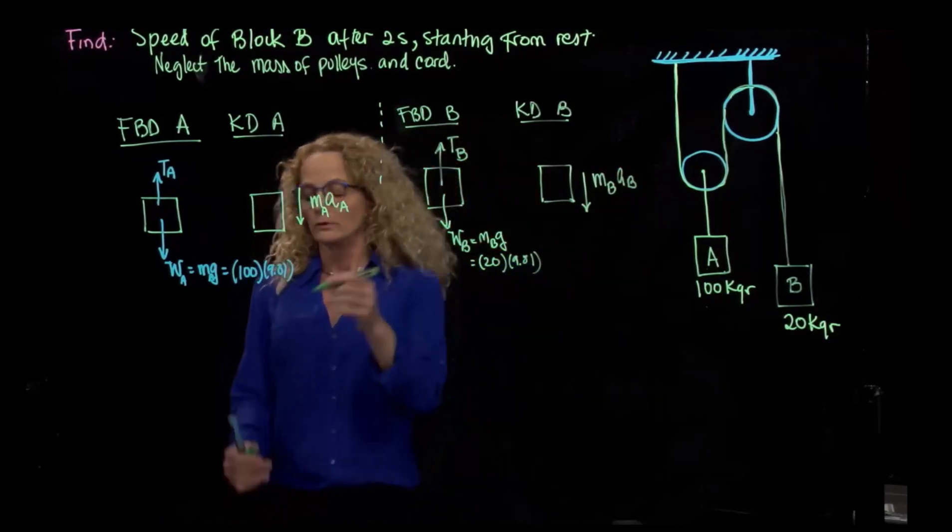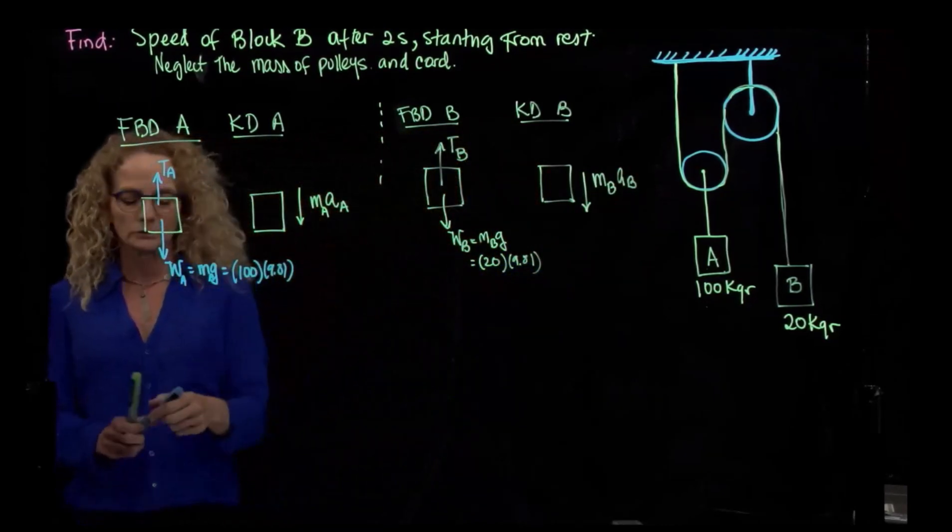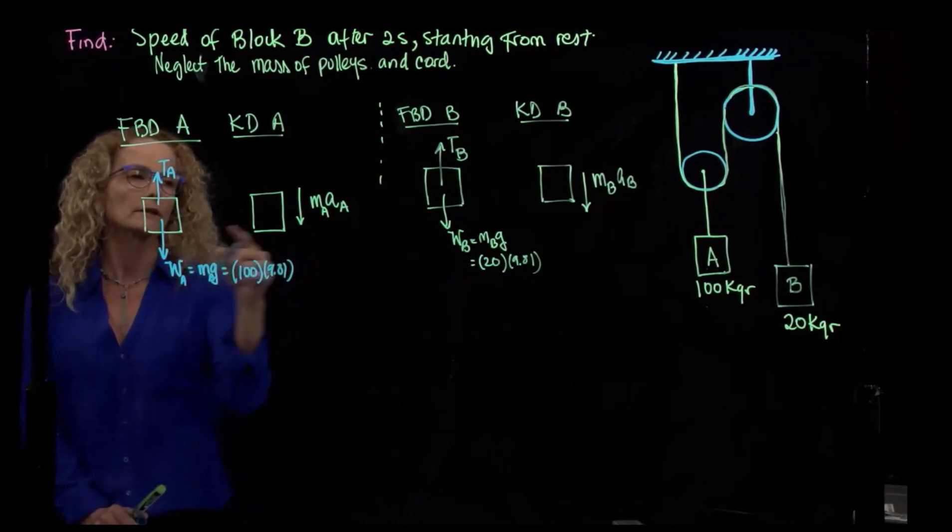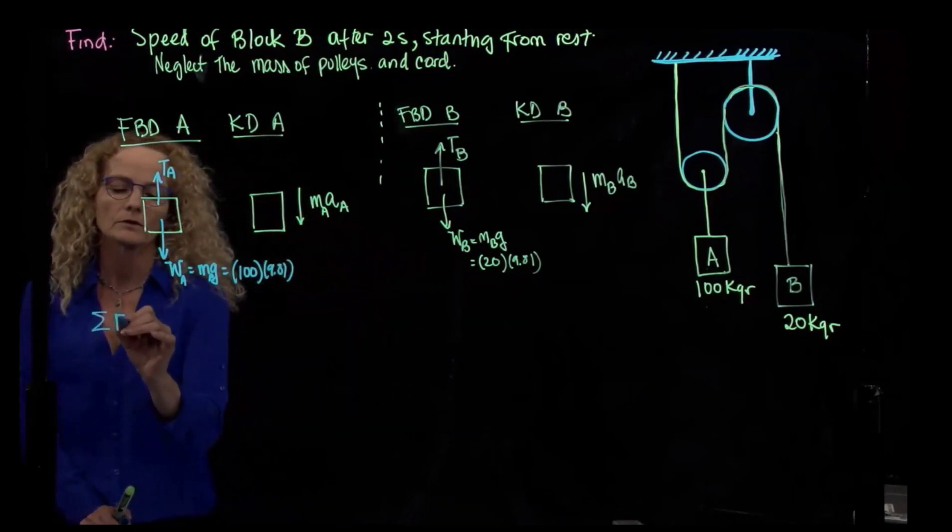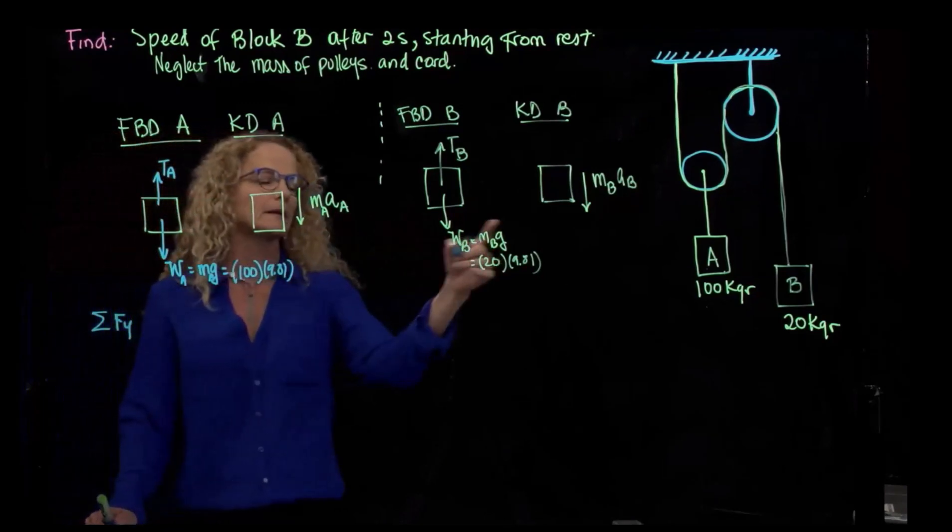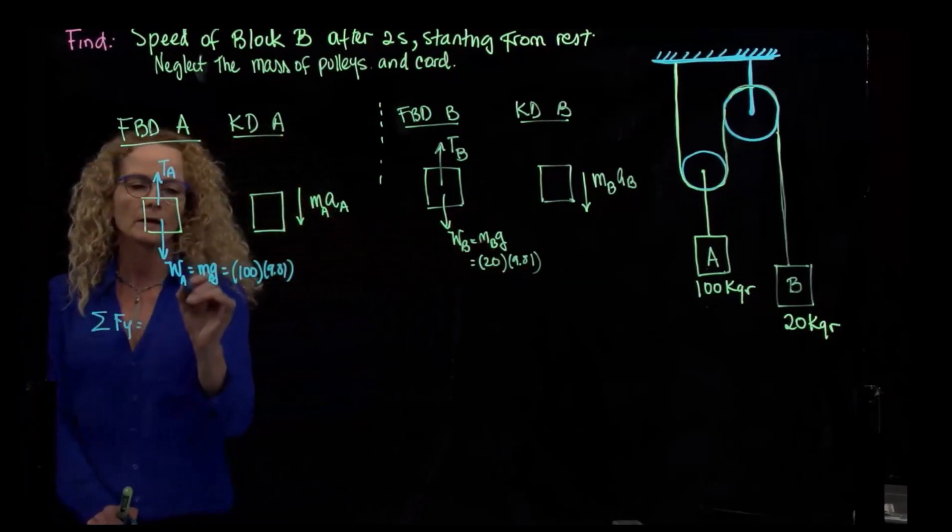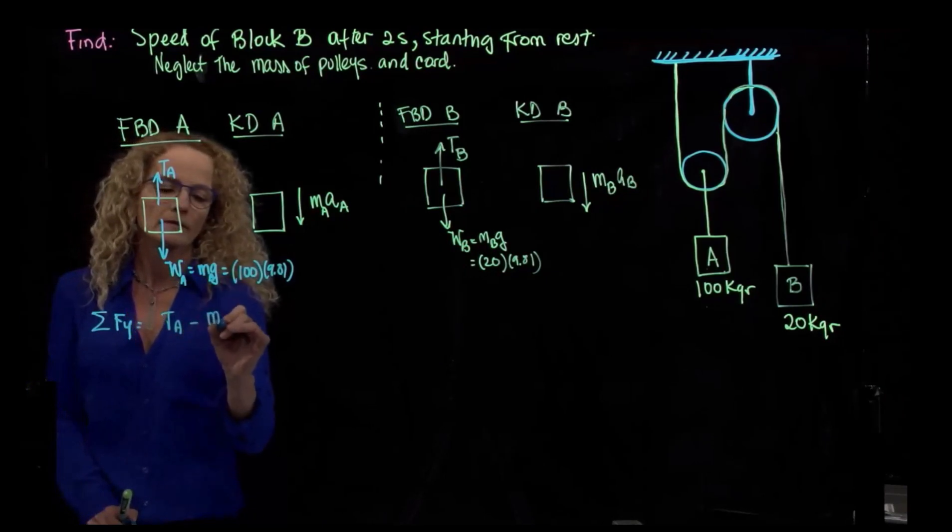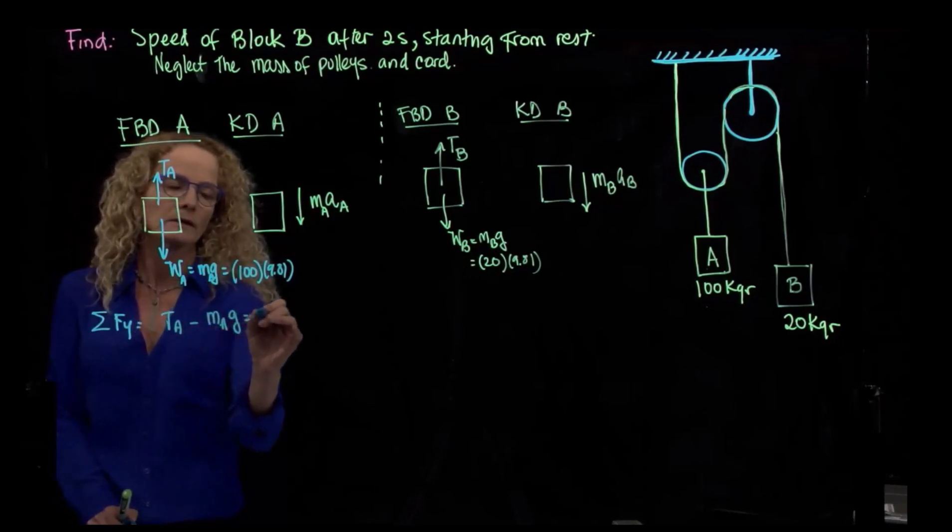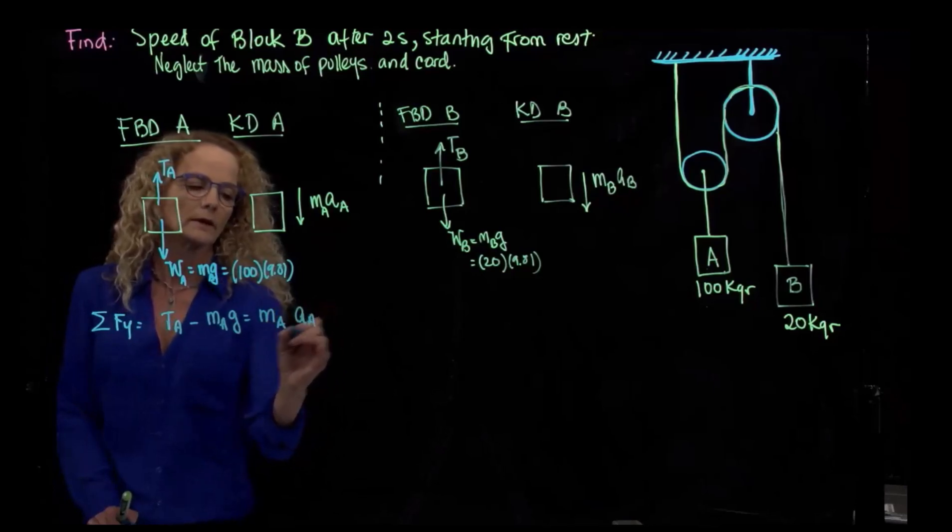Now if we do our equations of motion in those two diagrams, we will only add forces in Y because nothing is happening in X. And we have here that we have tension A minus mass A times gravity is equal to mass A times acceleration of A.